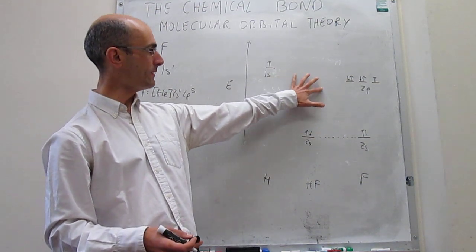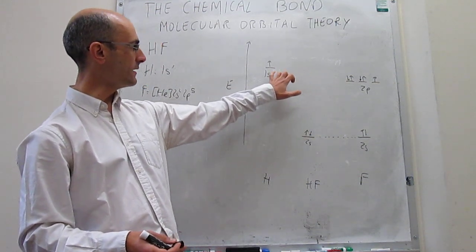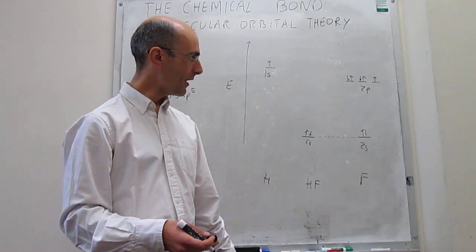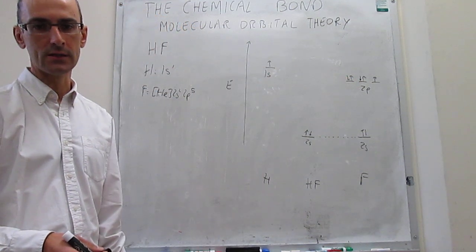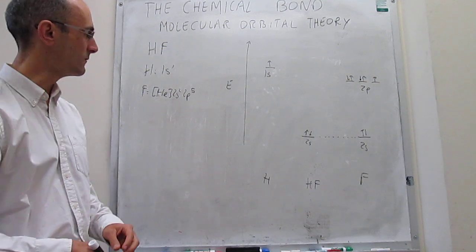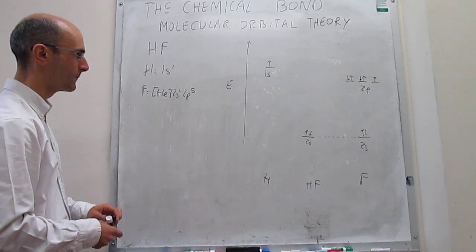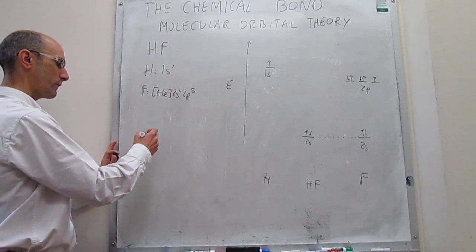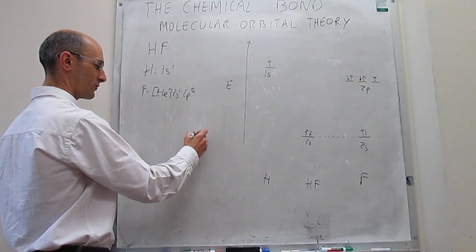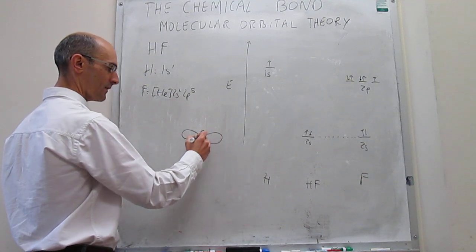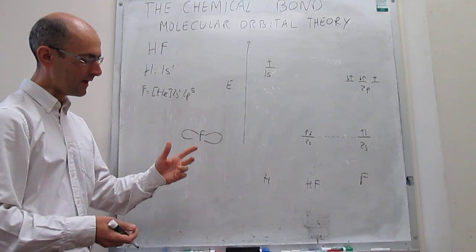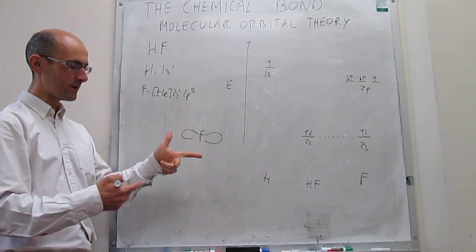We can still form a bond between the 1s orbital and the 2p orbital. Let's see how these molecular orbitals would work. When we think about the fluorine atom, those 2p orbitals are going to be distributed in space in perpendicular directions.